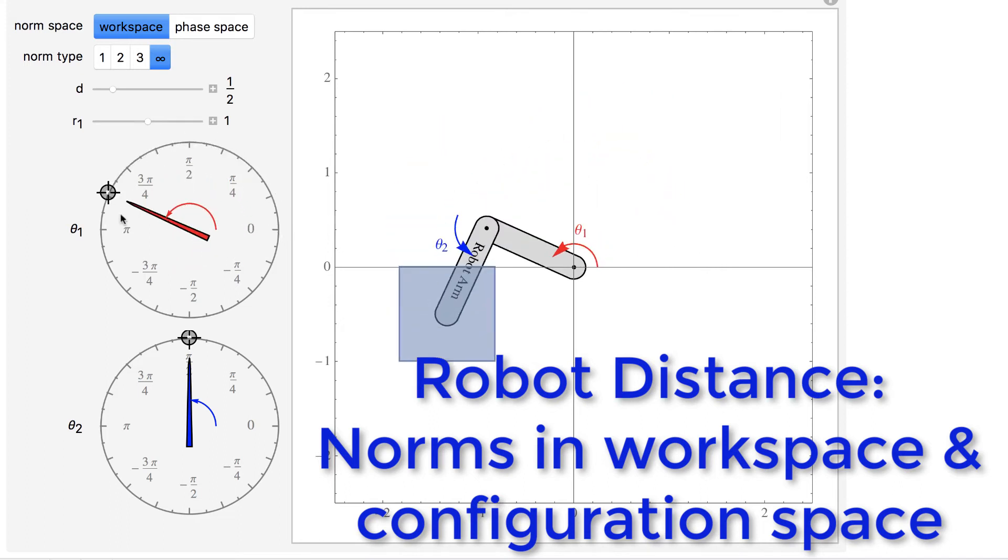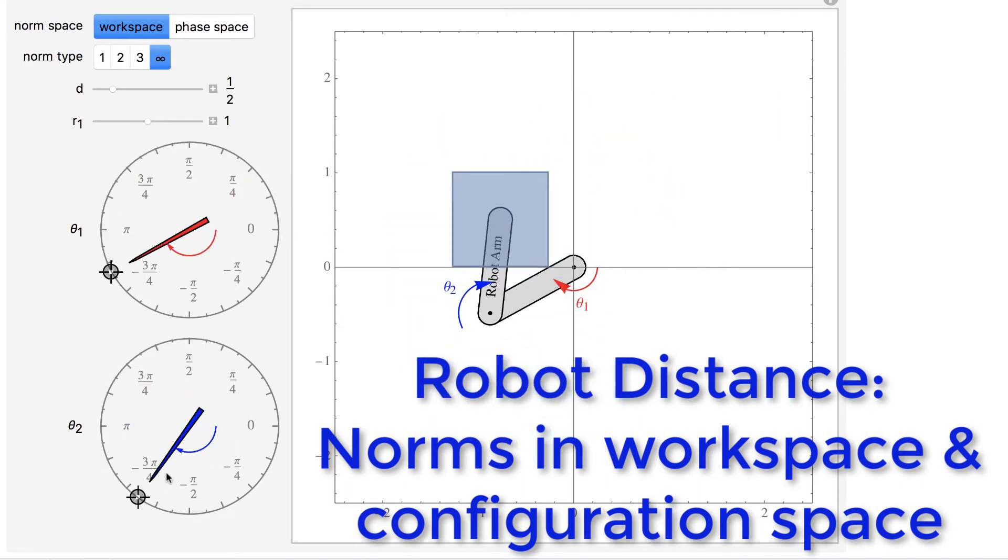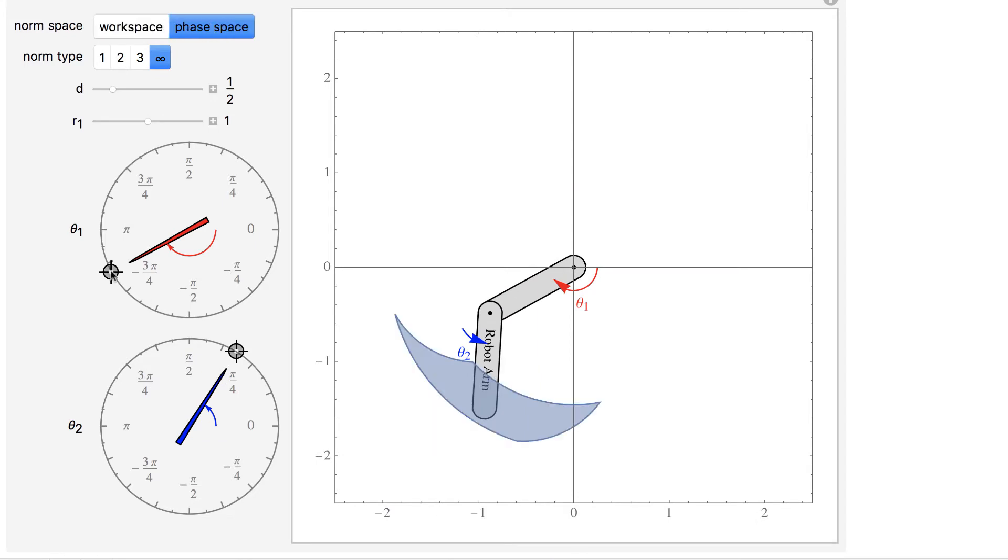How close are two configurations of the same robot? Although this question seems simple, it isn't always easy to answer with a robot arm.